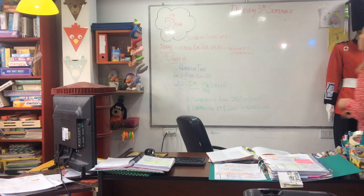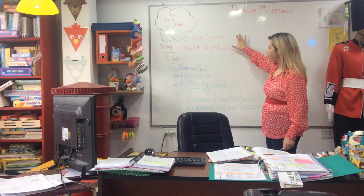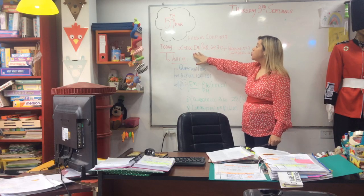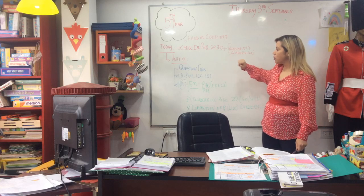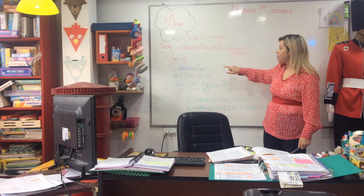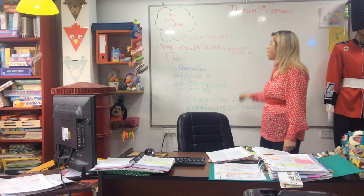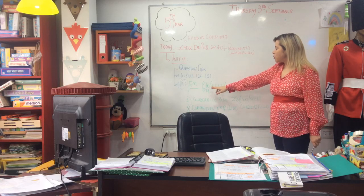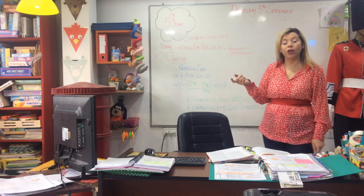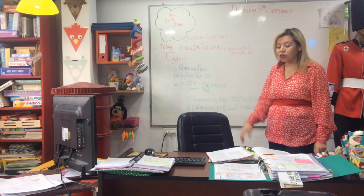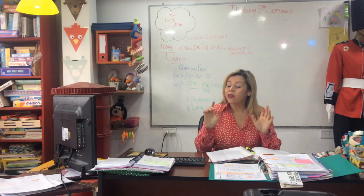Hello, fifth year, how are you today? Today's Thursday the 3rd of September. Remember you have to count in composition number seven. We're going to check the exam exercises on pages 68, 69, and 70, and we're going to do exercises on question tags that I explained last class. We are going to work on pages 119, 120, and 121 from the class book. And you are going to do pages 70 and 71 from the exam exercises, page 22 from the workbook where you are going to practice 'so' and 'such', and you have to write composition number eight from the list.